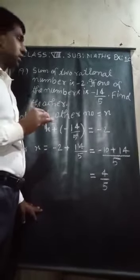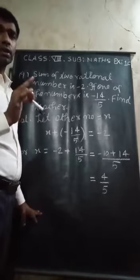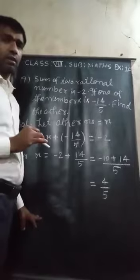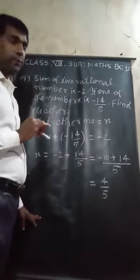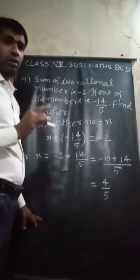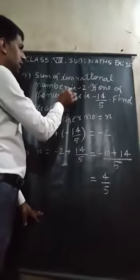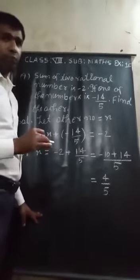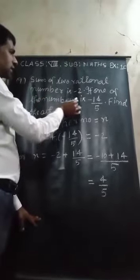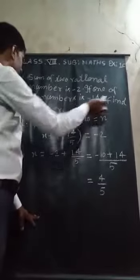This is question number 9. Inside question number 9, the question is sum of 2 rational numbers. What I am telling? Sum of 2 rational numbers is minus 2. If one of the numbers is minus 14 upon 5, find the other.